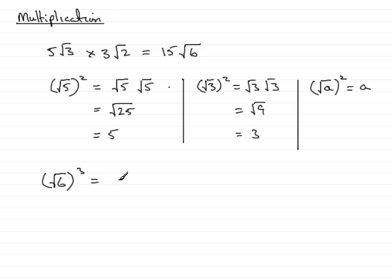Root 6 all cubed? What's that going to be? Well, it's going to be root 6 multiplied by another root 6 multiplied by another root 6. And root 6 times root 6, according to the above, is just going to be simply 6 because it's the square root of 36. So that's 6. So we've got 6 times another root 6 is just left at 6 root 6.